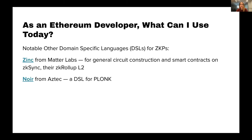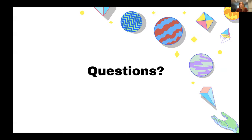Other notable languages: there's Zinc from Matter Labs, a custom language more similar to Rust, designed primarily for zkSync. Then there's Noir — I believe Aztec is giving a talk after me — which is a domain-specific language for PLONK. So that's not a ZK-SNARK system, it's a different zero knowledge proof system genealogy. And that's it — hopefully this talk has gotten you inspired!